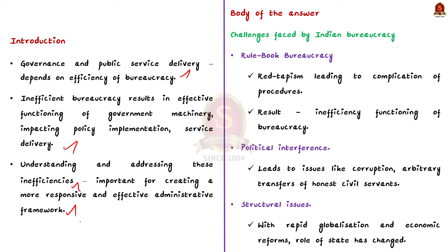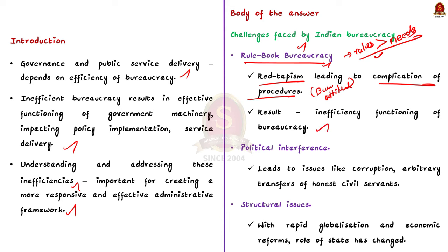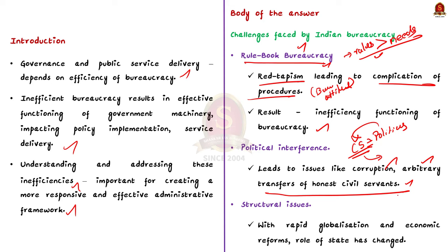Now let us see the important challenges faced by Indian bureaucracy. The first challenge is rule book bureaucracy — following rules and laws of the book without considering the actual needs of people. This attitude results in issues like red-tapism and complication of procedures, leading to inefficiency. The second major issue is political interference. Civil servants at the regional level work with political representatives who, for the sake of fulfilling populist demands, influence administrative functioning, sometimes leading to corruption and arbitrary transfer of honest civil servants.